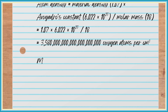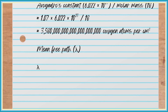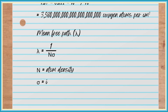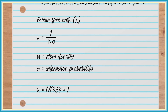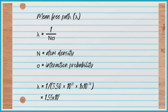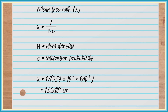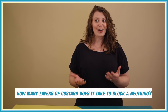We can calculate something called the mean free path — the average distance you'd expect a neutrino to travel in custard before being stopped — by doing one over the atom density multiplied by the interaction probability. That gives about ten times the distance between the Earth and the Sun.